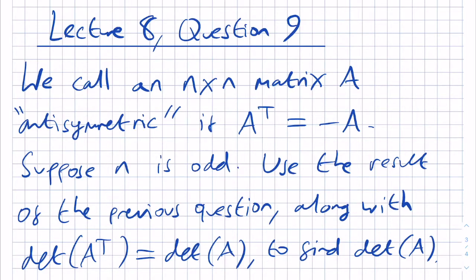The question says: we call an n by n matrix A antisymmetric if A transpose equals minus A. Suppose n is odd. Use the result of the previous question along with det of A transpose equals det A for all matrices A, to find the determinant of A.